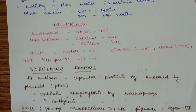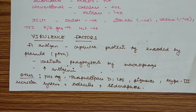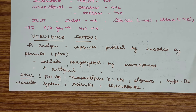Virulence factors of Yersinia pestis: the F1 antigen is the main virulence factor. It is a capsular protein antigen encoded by a plasmid that acts by inhibiting phagocytosis by macrophages, and is also antigenic. Other virulence factors include pH 6 antigen, phospholipase D, LPS (lipopolysaccharide), pigments, type III secretion system, adhesins, siderophores, etc.